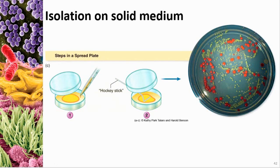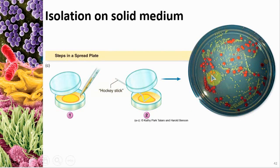A spread plate is different. You take an inoculating broth with your bacteria in it and drip it onto a petri dish that already has medium in it. Then you take a hockey-stick-shaped tool and spread it out over the surface of the agar. When it grows, you hopefully end up with well-isolated colonies.